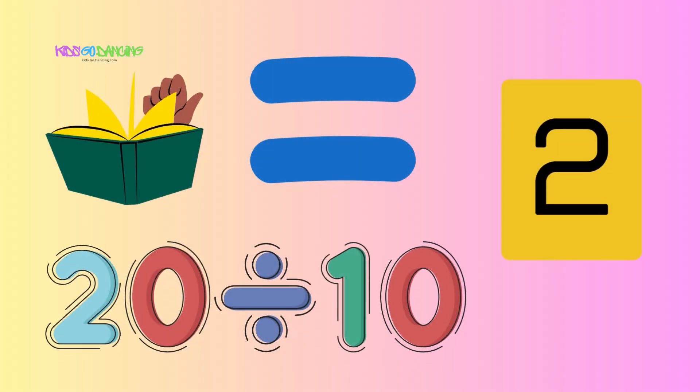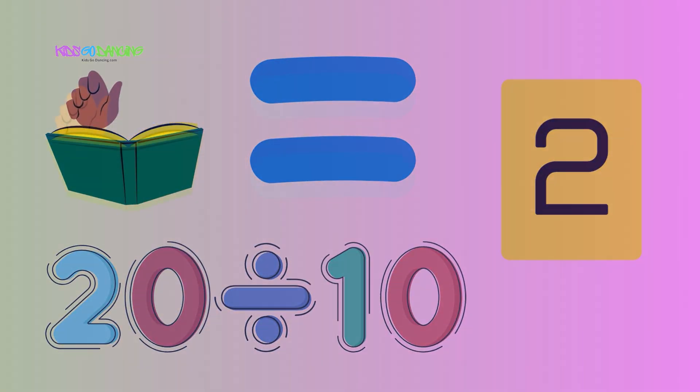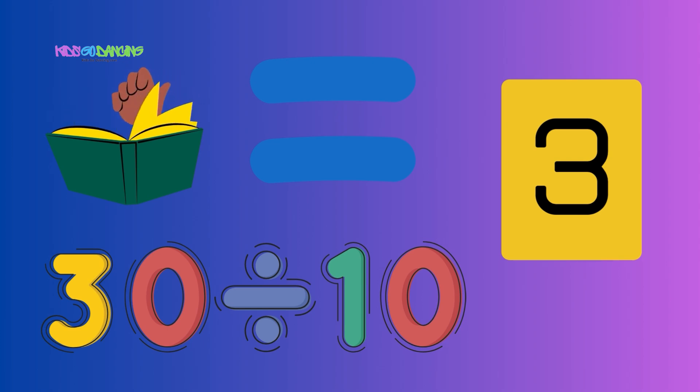20 divided by 10 is 2. Count the groups, 1 and 2. 30 divided by 10 is 3. Look at the numbers, 1, 2, 3.